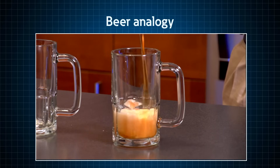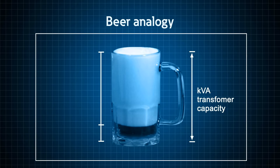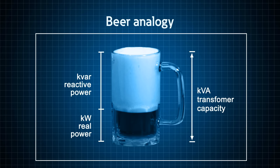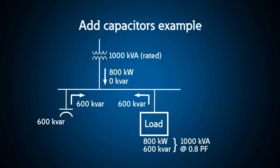Probably the most common analogy to explain reactive power is the beer analogy. The mug size or capacity is compared to the KVA rating of a transformer, which is the transformer's capacity. Utilities bill us on kilowatts or kilowatt hours, which is real power, or in the analogy is compared to the beer. The foam takes up space and essentially wastes capacity of the mug or the transformer. The foam is compared to the reactive power or KVARs. So if you remove the foam, you can fit more beer in the glass or real power. Adding capacitors compensates for the motor loads on the system and allows you to add more real watts or loads to your transformer.